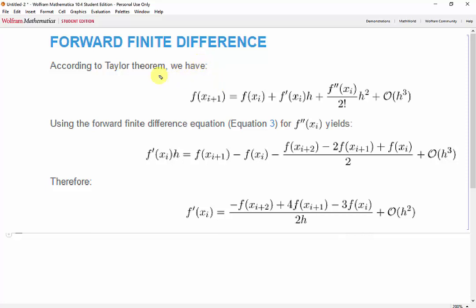If we take a look at the higher accuracy formula for the forward finite difference, we see that the Taylor series is expanded all the way up to f double prime. Then, the basic forward finite difference formula for the second derivative is subbed in for the f double prime. This causes the derivative to have a higher accuracy since now the error term is directly proportional to the square of the step size. However, it also requires more data points since we have an x_{i+2} term in addition to our x_{i+1} term.